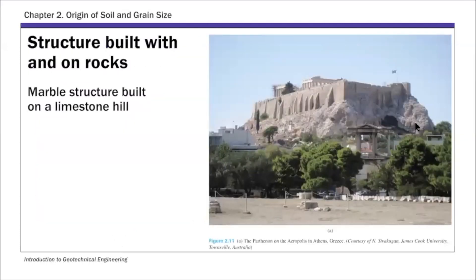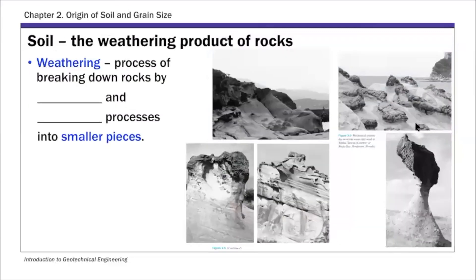Rock mechanics by itself is a different subject and is not the focus of this course. However, rocks have been used as construction materials for thousands of years. One example is the Parthenon in Greece, which is a marble structure built on a limestone hill that has been standing for over 2,000 years. For this geotechnical engineering course, we're going to focus on the weathering product of rocks, which is soil. The weathering process is basically the breaking down of rocks by two processes: mechanical and chemical. The resulting product is what we call soils.